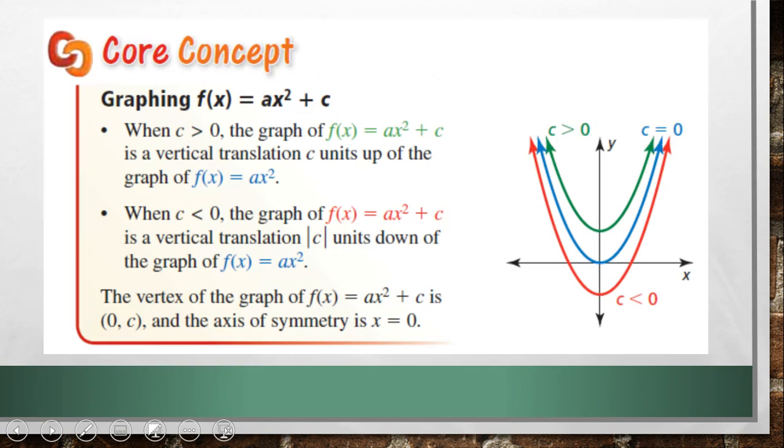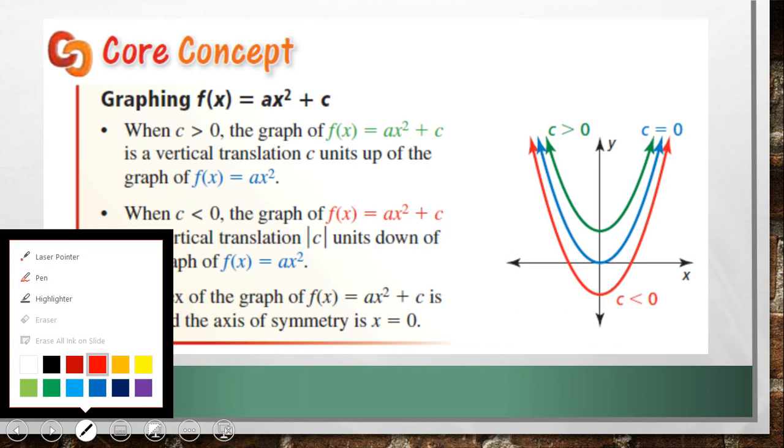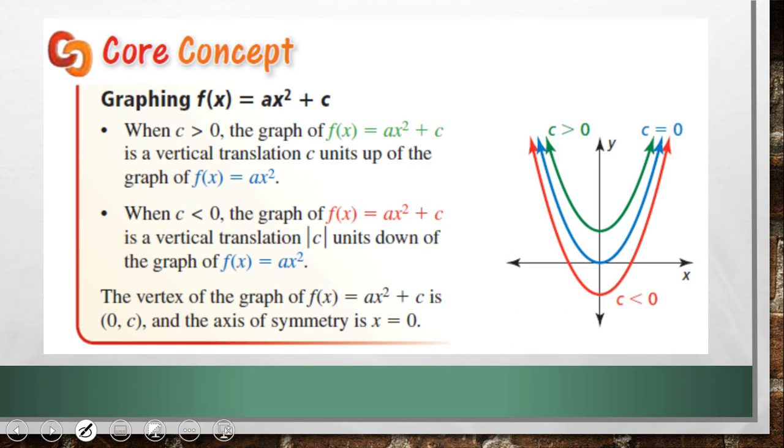We're going to skip the exploration as usual. So core concept here: when c is greater than zero, the graph of f(x) = ax² + c is a vertical translation c units up of the graph. So basically what c is doing is it's moving it up and down.